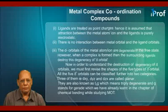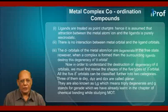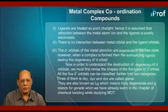Now, in order to understand the description of degeneracy of d-orbitals, we must first revise the shapes of the five types of d-orbitals. All five d-orbitals can be classified further into two categories. Three of them — dxy, dyz, and dzx — are called planar. They are also known as t2g, which means triply degenerate, and g stands for gerade.